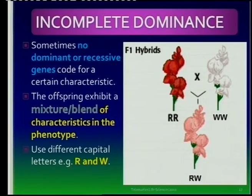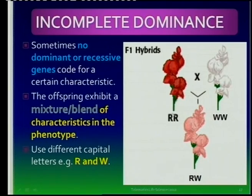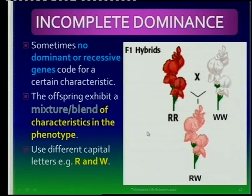What if both are dominant? With incomplete dominance, we have no dominance or recessive alleles - it is a mixture or blend of characteristics. Here we have a red flower crossed with a white flower, and all the F1 generation offspring were pink, which means it's a blend - the absence of dominance.